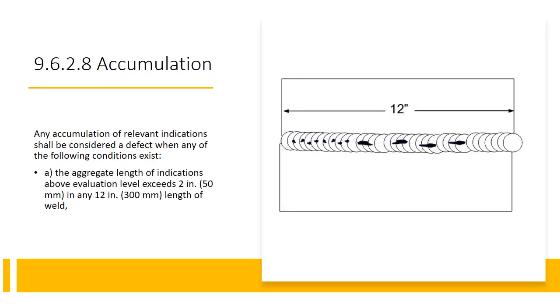9.6.2.8 Accumulation. Any accumulation of relevant indications shall be considered a defect when any of the following conditions exist. A. The aggregate length of the indications above the evaluation level exceeds two inches in any twelve inches of length of weld. So if you've got two inches in any twelve inches of weld and it's all accumulated, that all stacks up and it's greater than two inches, it's going to be a defect. You're going to have to deal with it.